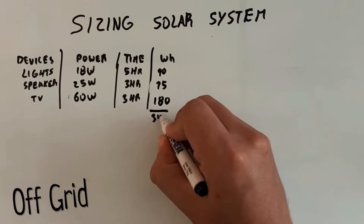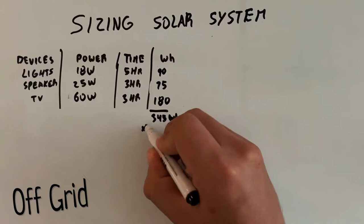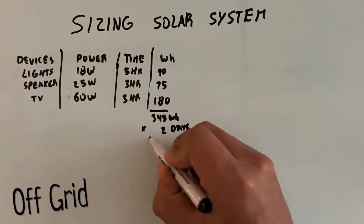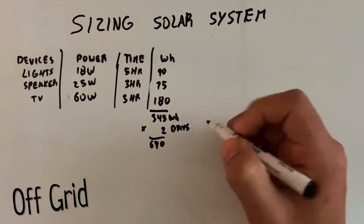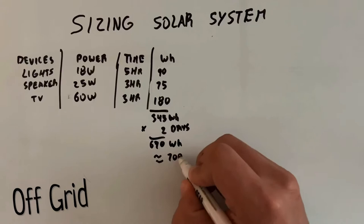Now we're going to add all these three up, so we get 345 watt hours, and if we want to go one full day of rain, we're going to have our system be able to handle that, so we multiply by 2, we got about 690 watt hours, we can round this up to 700 watts.